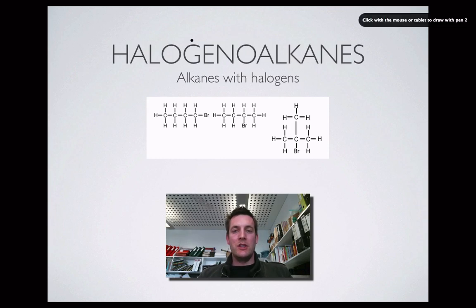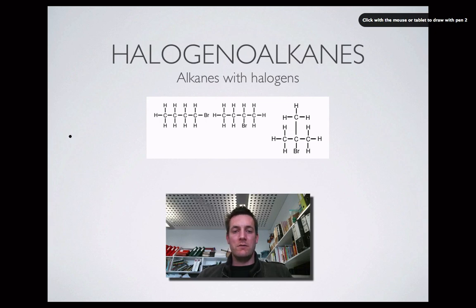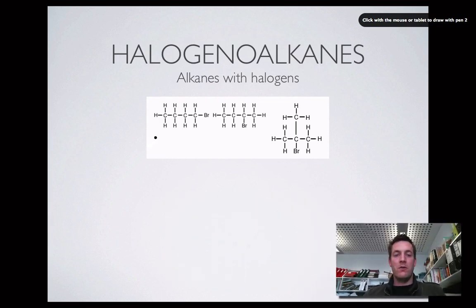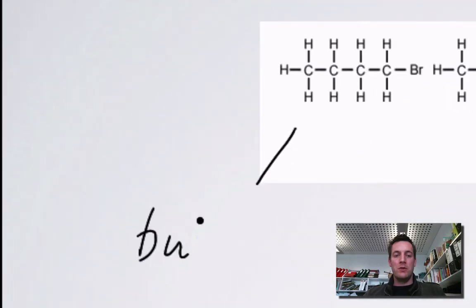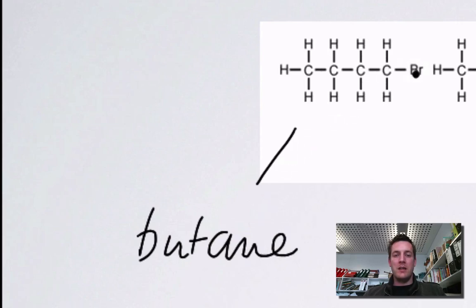We'll start by talking about halogenoalkanes — alkanes that have halogens attached. These three halogenoalkanes all have bromine attached and they've all got four carbon atoms. This is butane because the longest chain is four carbons long, so it starts with 'but' and ends in 'ane' because there are only single bonds. There's a bromine attached to the first carbon in the chain, so this molecule is called 1-bromobutane.